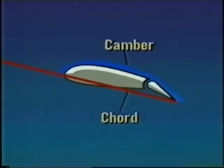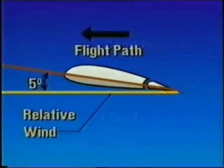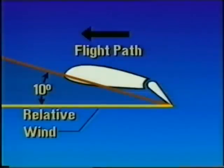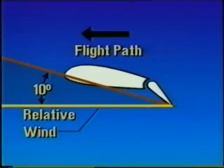As flaps extend, they change both the camber and the chord line of the wing in the area of the flaps. This not only produces lower pressure above the wing due to the change of camber, but it also changes the wing's angle of attack. Suppose that with the flaps up, the angle of attack is five degrees. By lowering the flaps, which changes the chord line, the angle of attack has increased to 10 degrees. This higher angle of attack provides more lift and more drag.